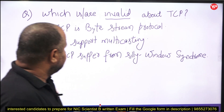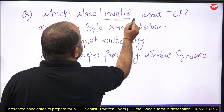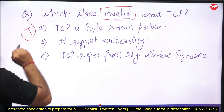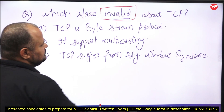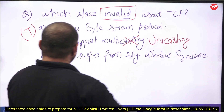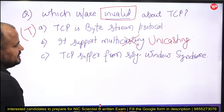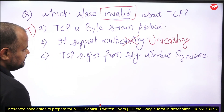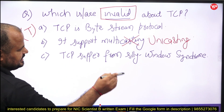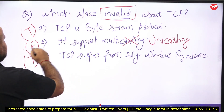Moving to the next problem: which of the following statements about TCP is invalid? TCP is a byte stream protocol — true, it sends data in the form of bytes. TCP supports multicasting — no, this is not true; TCP supports unicasting. TCP suffers from the silly window syndrome problem — yes, this is true. You can watch the lectures already available on the Eurpedia platform for more on silly window syndrome. So the invalid statement is option B.